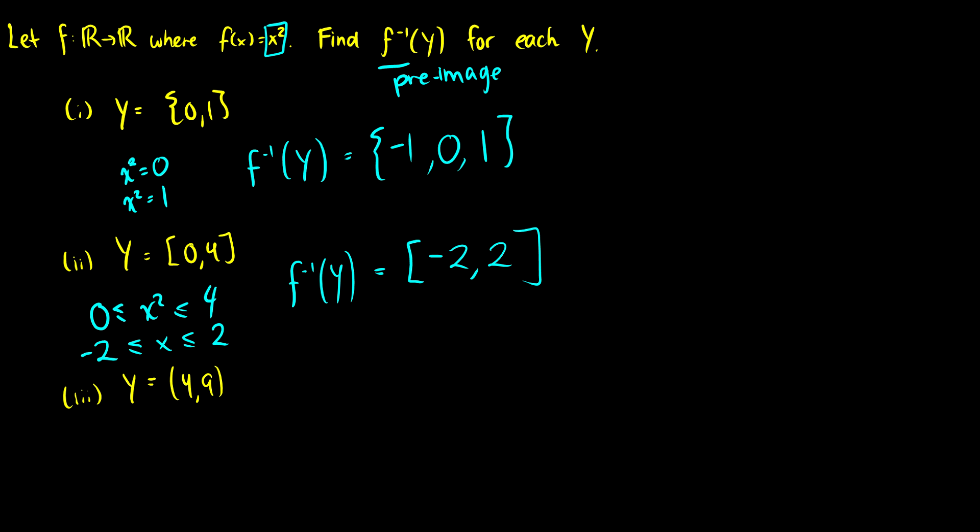What about this from 4 to 9? So we want x² to be greater than 4 but less than 9. Because remember, when we squared the negative numbers, they also become positive.